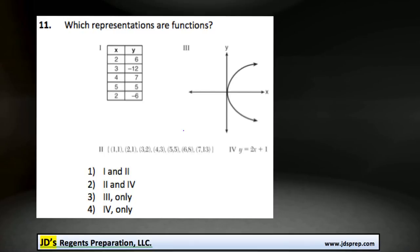This is problem number 11 from the August 2015 Algebra Regents Exam. We've got four different representations of some data. We've got a table of values, a graph, some ordered pairs, and an equation.